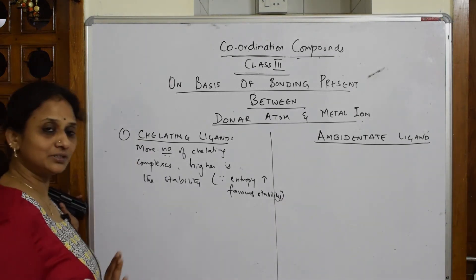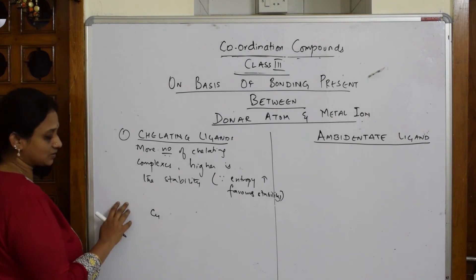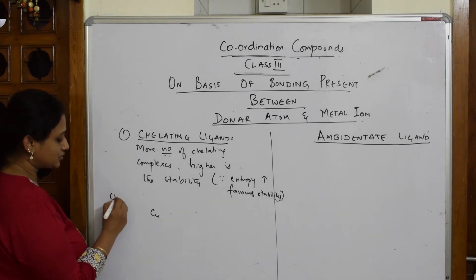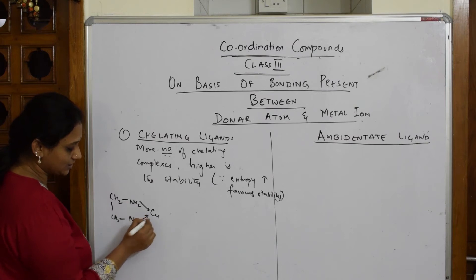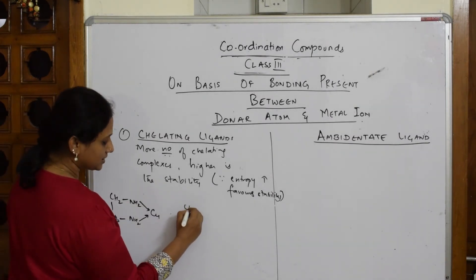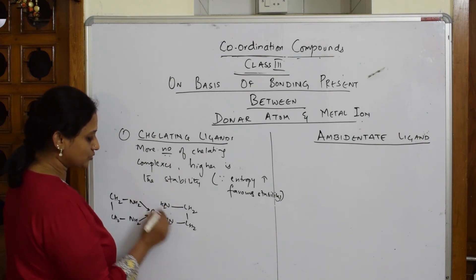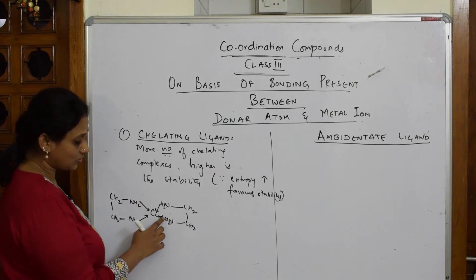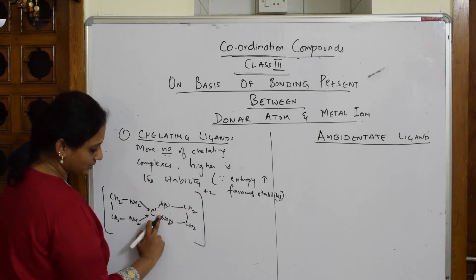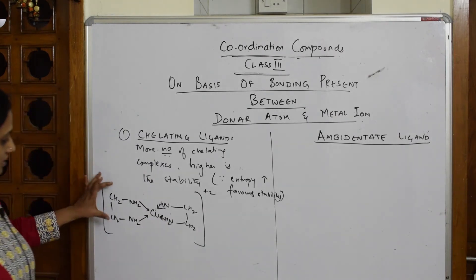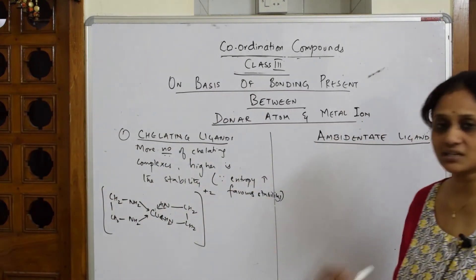Let me take an example. We have a metal atom, copper, linking with a bidentate ligand: CH₂-CH₂-NH₂-NH₂, which is ethane-1,2-diamine. On the other side, another CH₂-CH₂-NH₂ links from here as well. This forms a chelate ring around the copper. The whole complex is called a chelate complex with a 2+ charge. Because it's a bidentate ligand, it comes and forms a chelate ring around the metal atom, attaining stability.